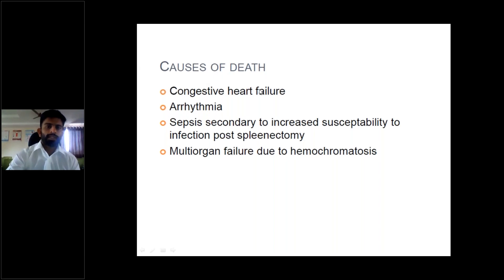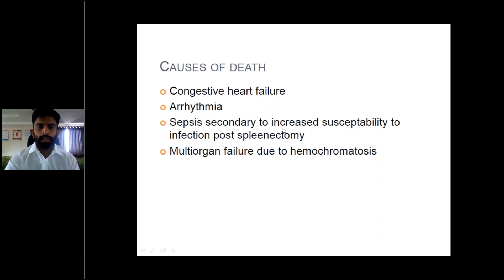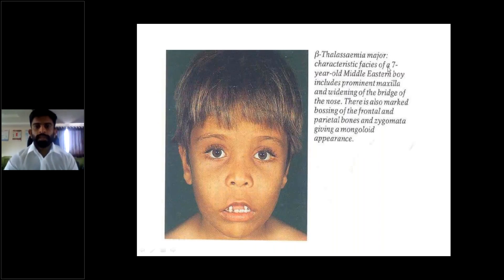Causes of death in thalassemia include congestive heart failure and arrhythmia due to iron deposition from transfusional iron overload, sepsis secondary to increased susceptibility to infection (post-splenectomy), and multi-organ failure due to hemochromatosis or iron overload. Beta thalassemia major has characteristic facies — seen in a seven-year-old Middle Eastern boy — including prominent maxilla, widening of the bridge of the nose, marked bossing of the frontal and parietal bones and zygoma, giving a mongoloid appearance.